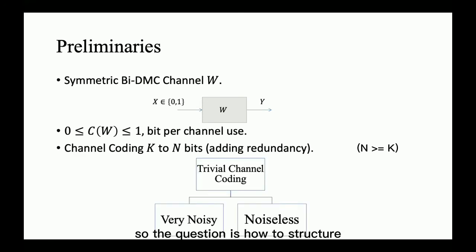So, the question is how to structure this mapping to achieve capacity. The answer is not easy. However, for two types of channels, the channel coding problem is trivial. Number one, for a very noisy channel,